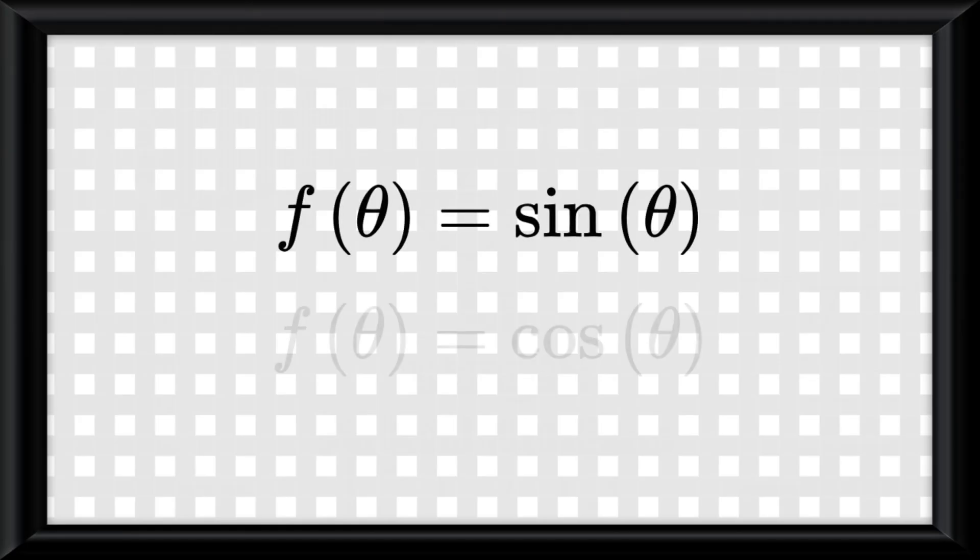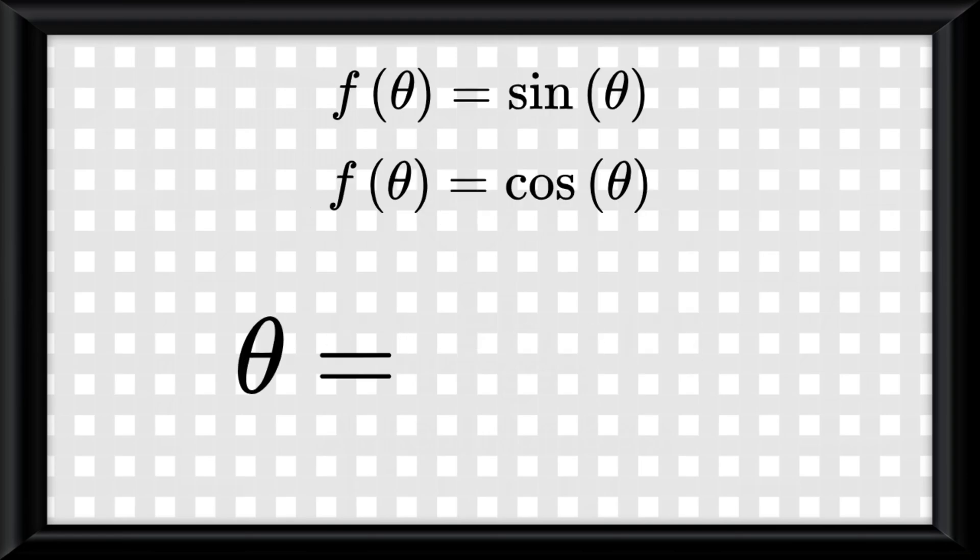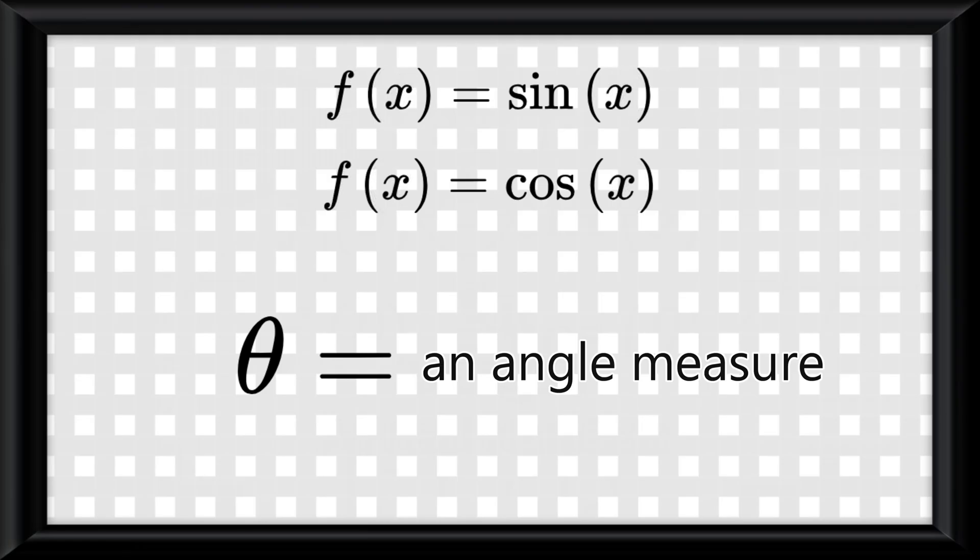The period of a sine and cosine graph would be 2 pi. And to write out the basic sine and cosine equation, you would say something like f of theta is equal to sine of theta, or f of theta is equal to cosine of theta. Theta in this case would just be an angle measure, so it would function the same as something like x or z.